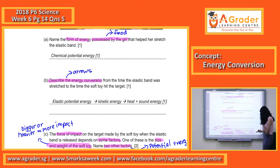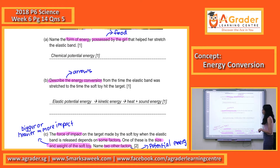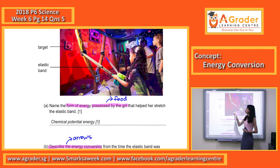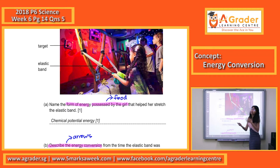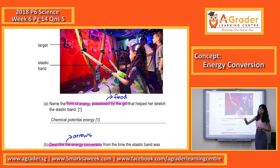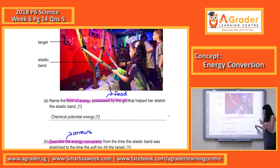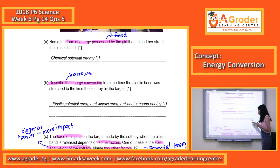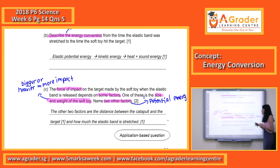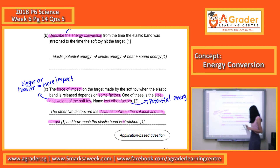You need to look out for factors that affect elastic potential energy. Basically, elastic potential energy can be affected by how far you stretch the elastic band. Another factor is how near or how far the catapult is to the target. The nearer it is, the less energy is converted to other forms, so there is more force on the target. The further it is, as it travels to hit the target, more energy is converted to other forms. So the two other factors that affect impact are: the distance between the catapult and the target, and how much the elastic band is stretched.